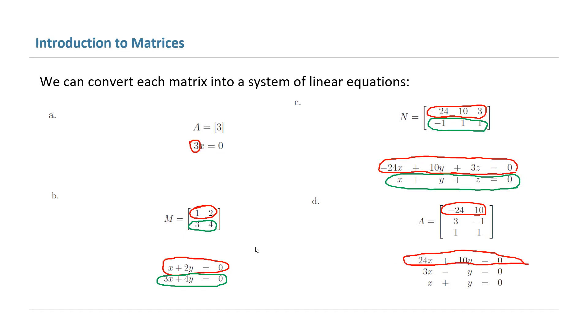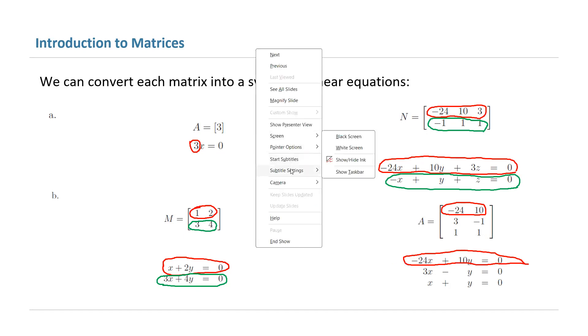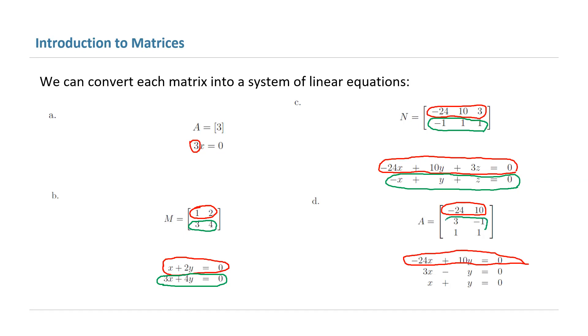And for the second row, you have 3 and negative 1, which converts into 3x minus y equal to 0.